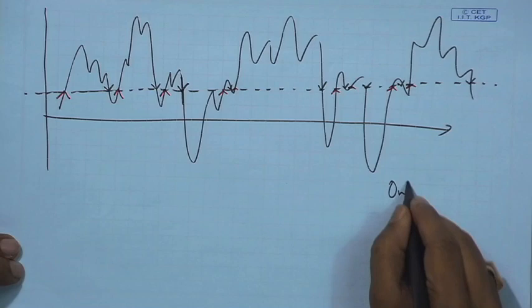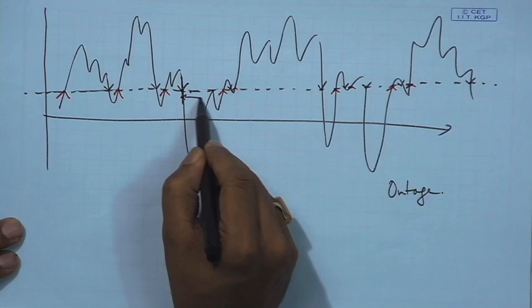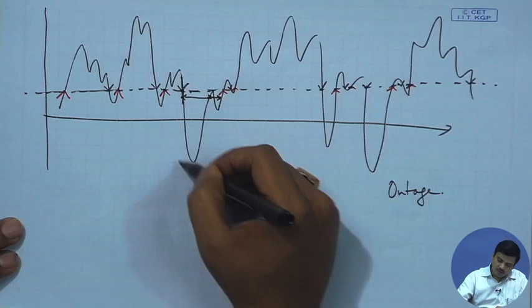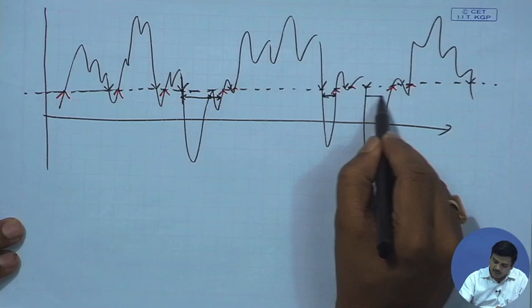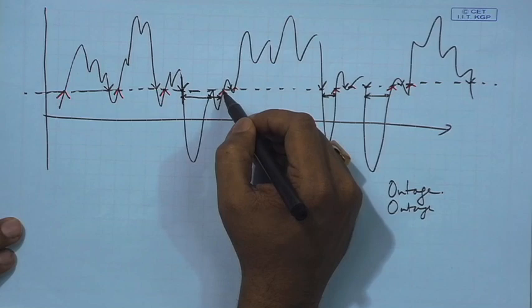The average duration of fade is the average period for which the signal remains below the threshold — the time from when the signal goes down to when it comes back up. Both the level crossing rate and the average duration of fade indicate outage behavior: once the signal goes below the threshold, it will remain there for a duration corresponding to the average duration of fade.